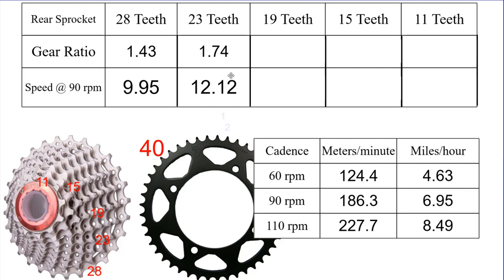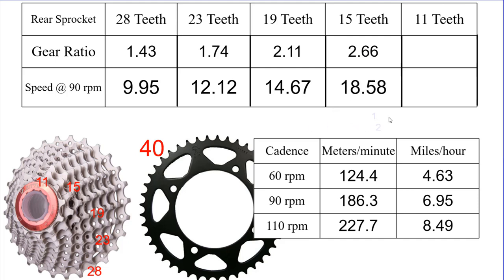Going to 19 teeth, we now have a gear ratio over 2 — so every pedal rotation spins the rear tire more than twice — giving us a speed of about 14.5 miles an hour. At 15 teeth we're close to our highest gear, giving us about 2.5 times the value, which is about 18.5 miles an hour. And then the highest gear, which is almost a 4-to-1 ratio at 40 to 11, gives us about 3.64. So every pedal rotation spins the rear tire 3.64 times, and multiplying by our cadence at 90 RPM gives a speed of 25.33 miles per hour.